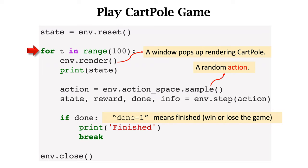Then repeat a for loop for maybe a hundred iterations. The line env.render is not necessary — if we execute it, a window will pop up and we will see the animation. In every iteration we need to make a decision, which is an action. Here I don't know a good policy, so I randomly sample an action using this line of code. However, if we have a good policy, we can use it to make a decision based on the current state.